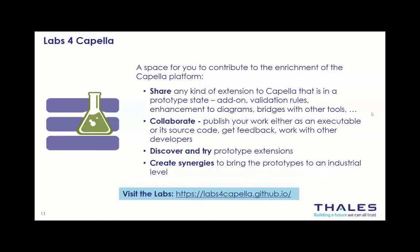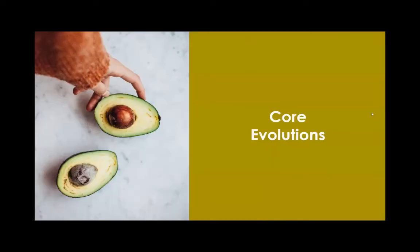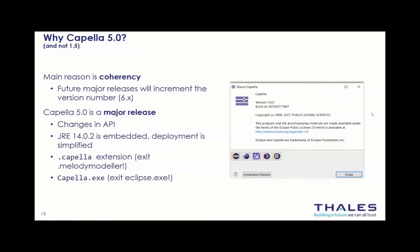To summarize the Capella community: you will find new and revamped ways to interact as a community. We hope these different ways for communicating and working together will continue boosting community growth. Now let's go to the second chapter — the core evolutions of Capella and what has been developed last year. First, there is a new version called Capella 5.0. The previous versions were like 1.4, 1.3, 1.2 — so why 5.0 and not 1.5?